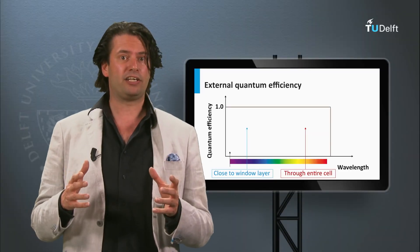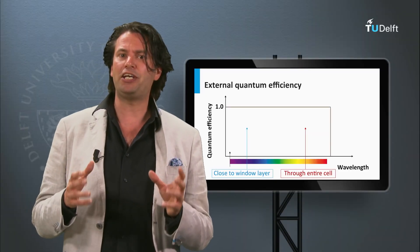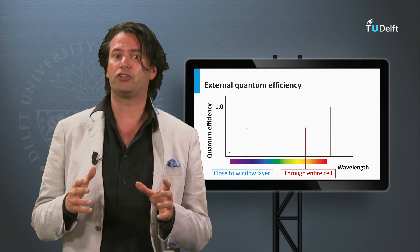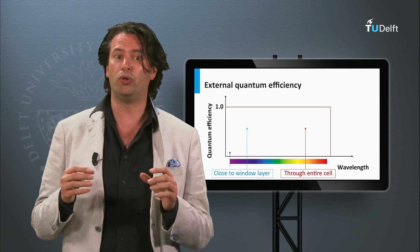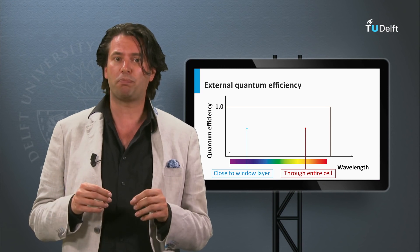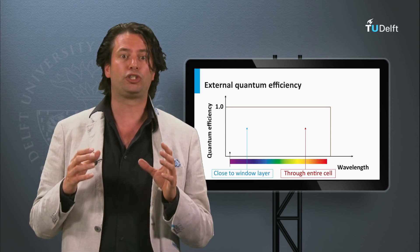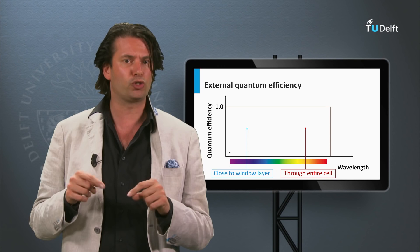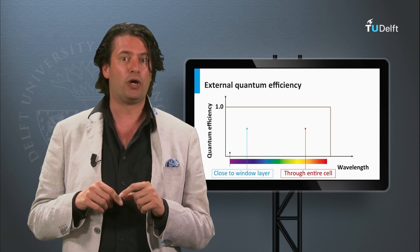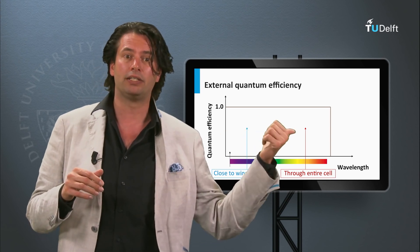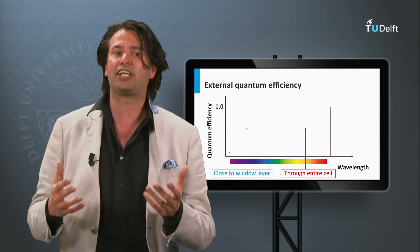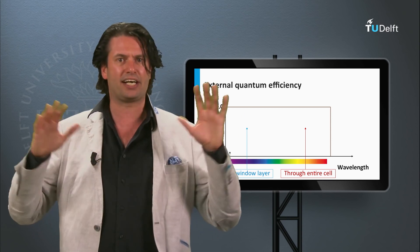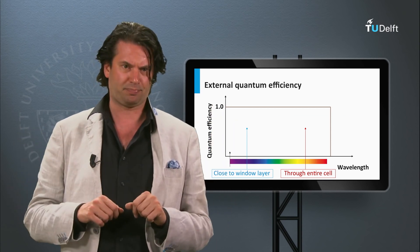As the absorption of photons generates excited charge carriers, the wavelength dependence of the absorption coefficient determines the local generation profile of the charge carriers. At the front side where the light enters the absorbing film, the generation of charge carriers is significantly higher than at the back side. If we look at the EQE of a solar cell, the EQE values measured in the blue correspond to charge carriers generated close to the window layer, whereas the EQE in the red part represents charge carriers generated through the entire absorber layer.